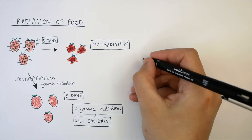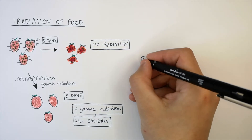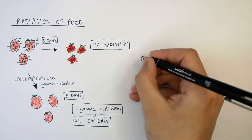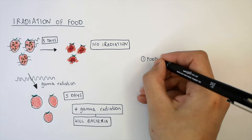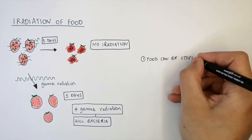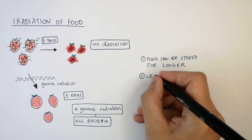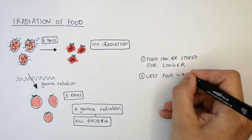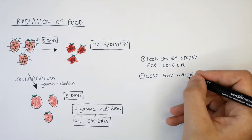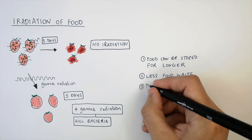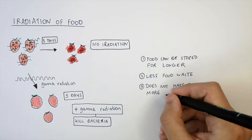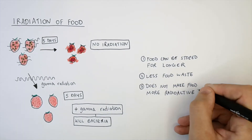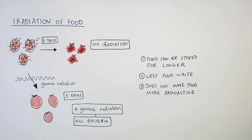The advantages of using gamma radiation in the irradiation of food is that food can be stored for longer. Therefore, there is less food wasted. Remember, it does not make the food more radioactive. The food has not been contaminated.